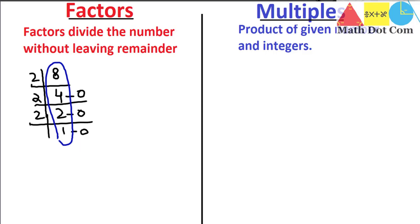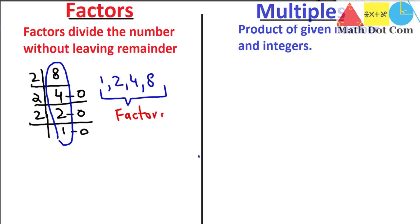I will tell you in my next lecture how you can find factors in the easiest way, but here you just need to know what the factors of eight are. The factors of eight are the numbers that can divide eight with zero remainder: one, two, four, and eight. Now let's move towards multiples.